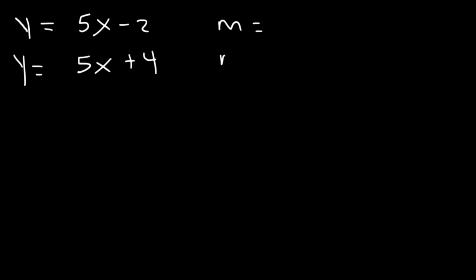The slope for both functions is equal to 5. If you recall this equation is in slope-intercept form and the slope is the number in front of x. Parallel lines have the same slope.